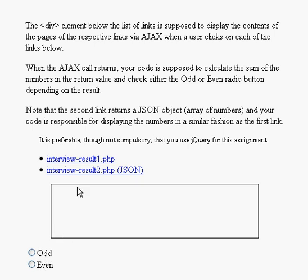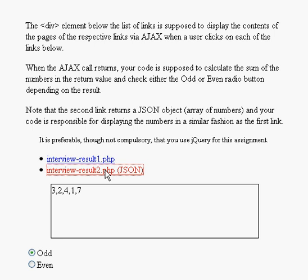For example, clicking on InterviewResult1.php will retrieve from the server a string of numbers that when added up will derive into an odd number. As for the second link, it does the same but this time it is a JSON array of numbers and the final result would be an even number.